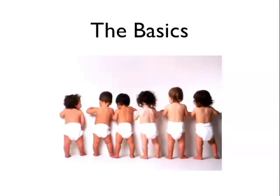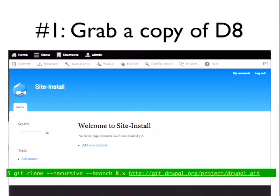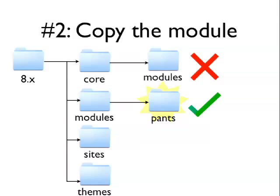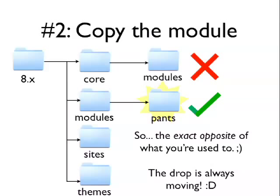So let's go ahead and look at how we would do this in Drupal 8. First, you grab a copy of Drupal 8 — you're going to want to do that from Git, because we change it 50 times a day, and you want to always be on the latest version. In Drupal 7 and below, you'd put your modules in sites/all/modules, because only an idiot puts things in the core modules directory. But in Drupal 8, we created a core directory where the core modules go, and now you actually do put your modules in the root modules directory.